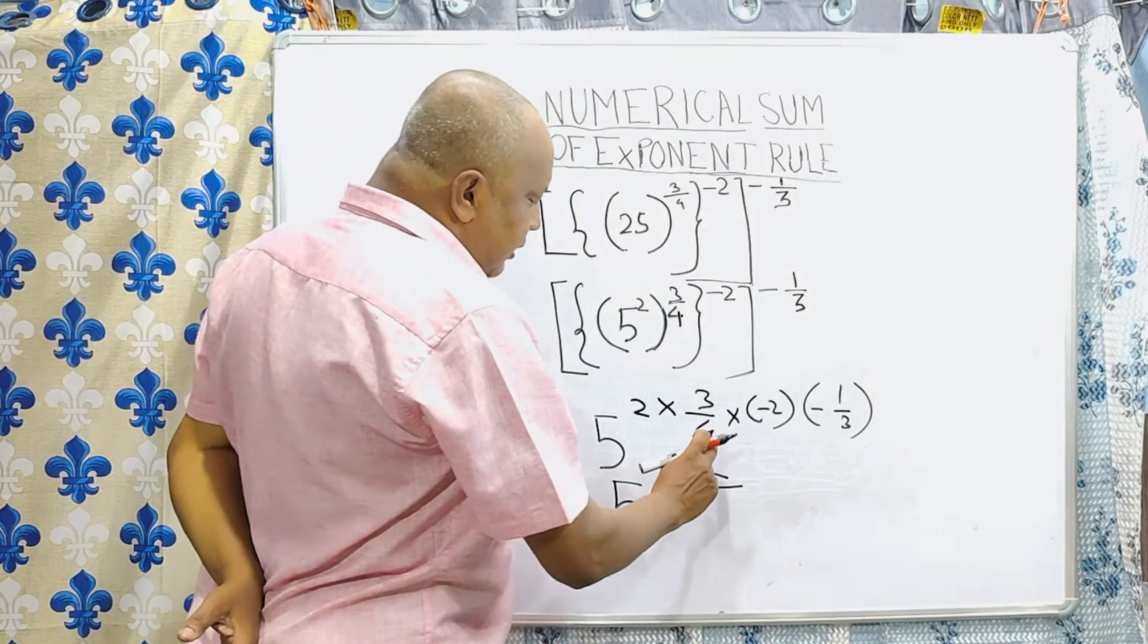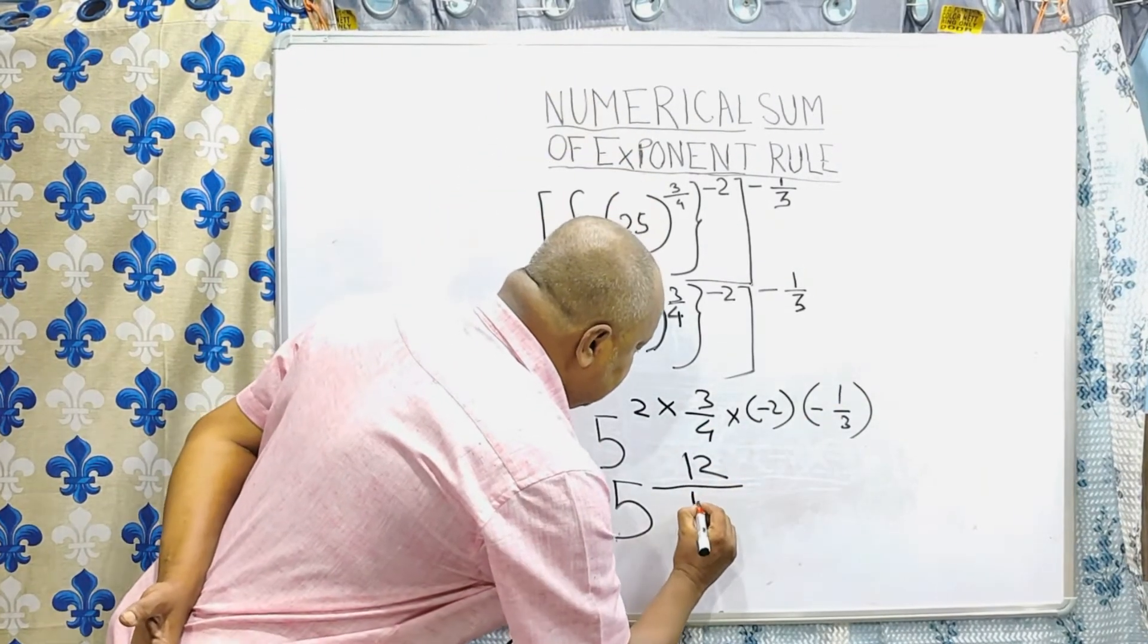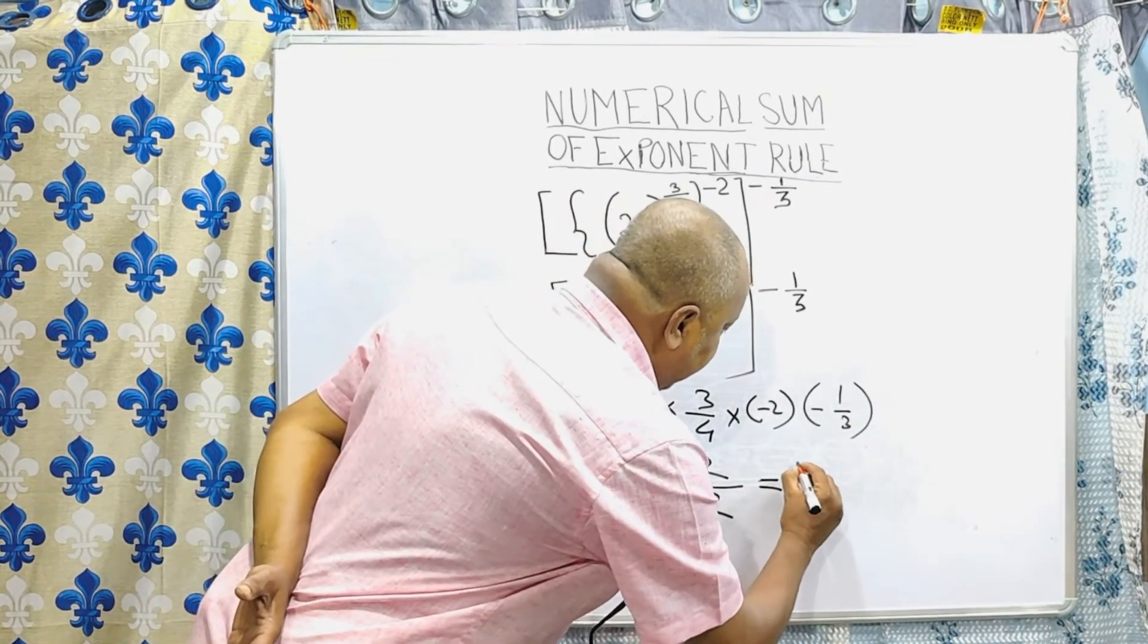And denominator is clear. 4 into 3 is 12. So your answer will be simply 5.